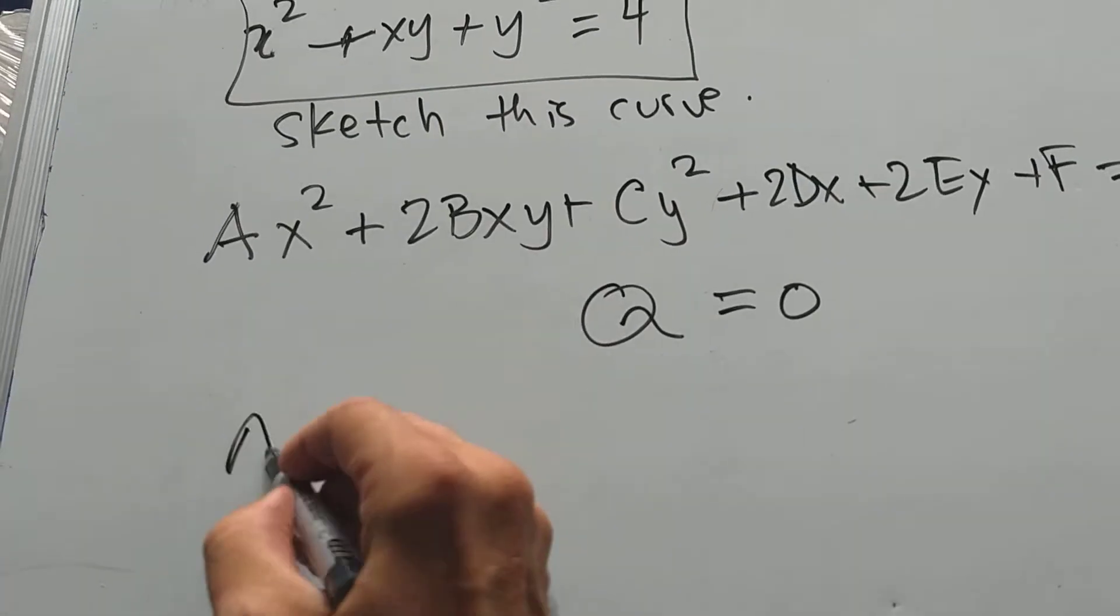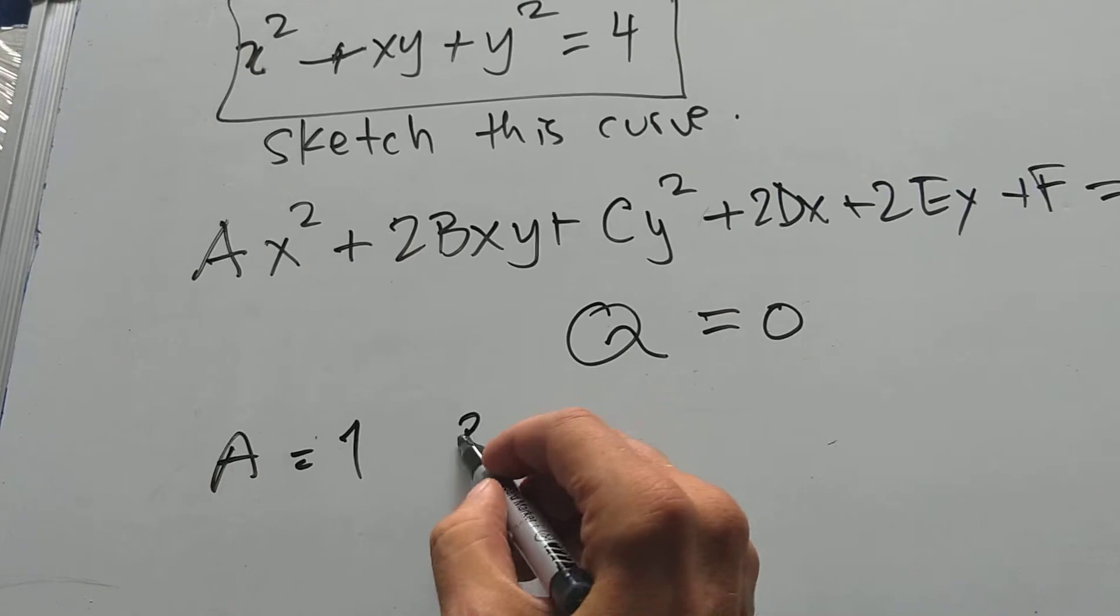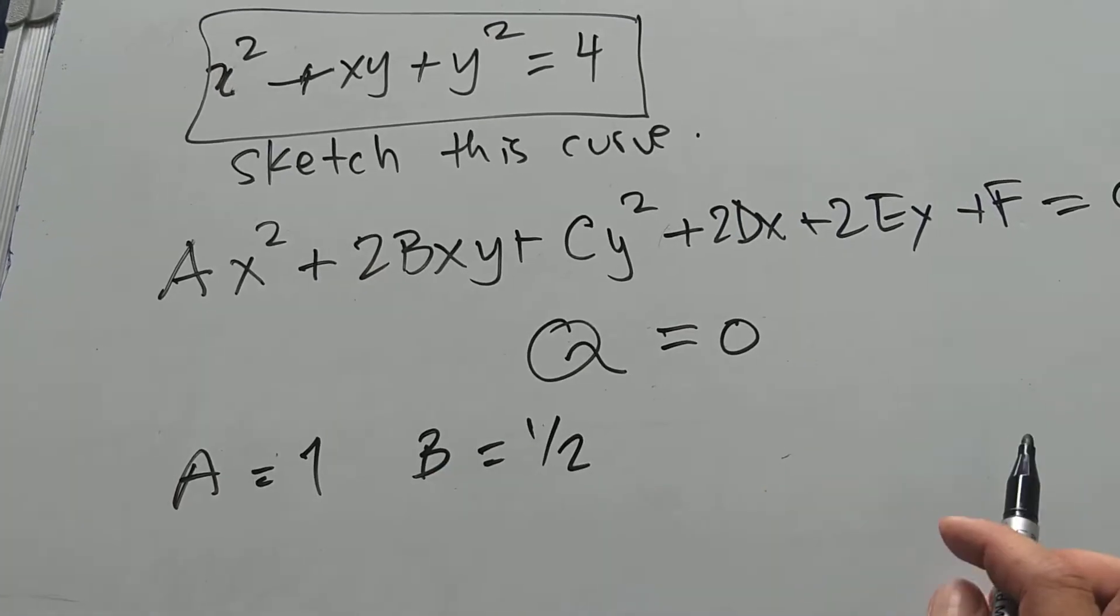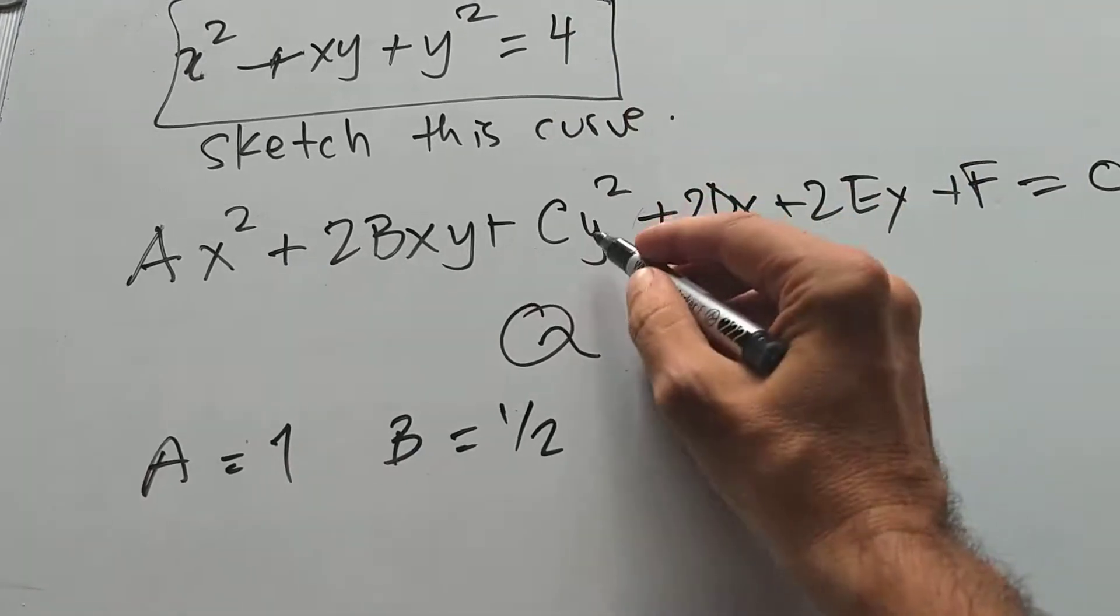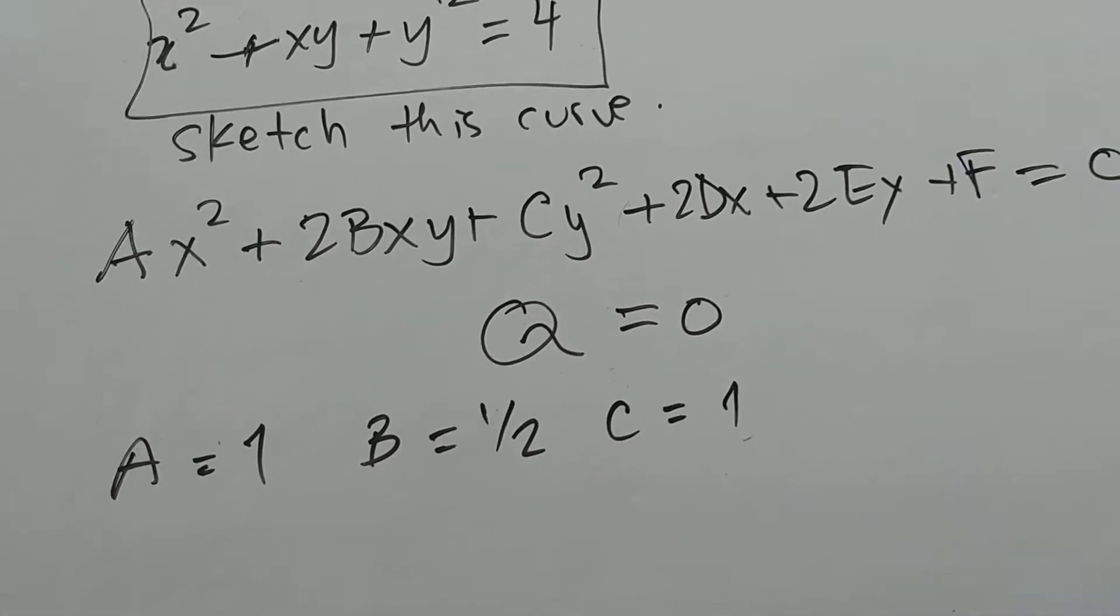Alright. So what is a here? a is 1. b is 1 half. And c is 1. The rest is 0.